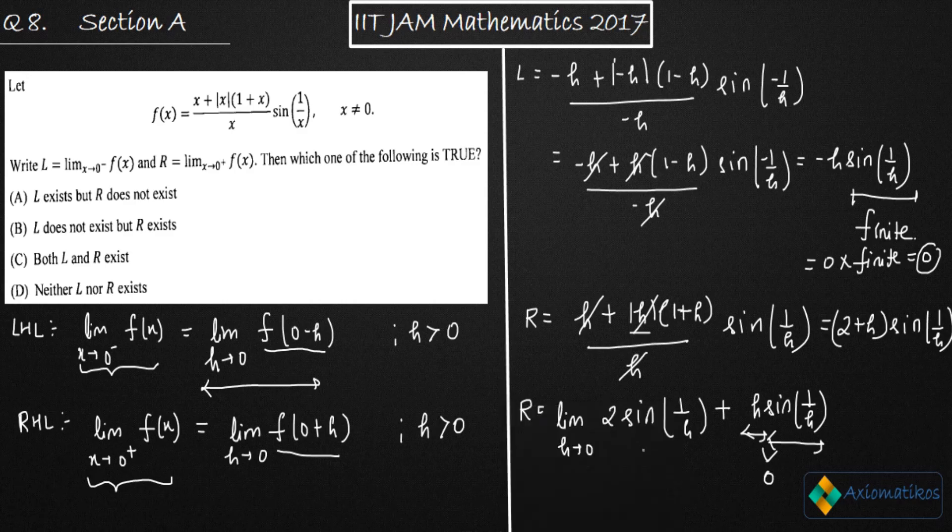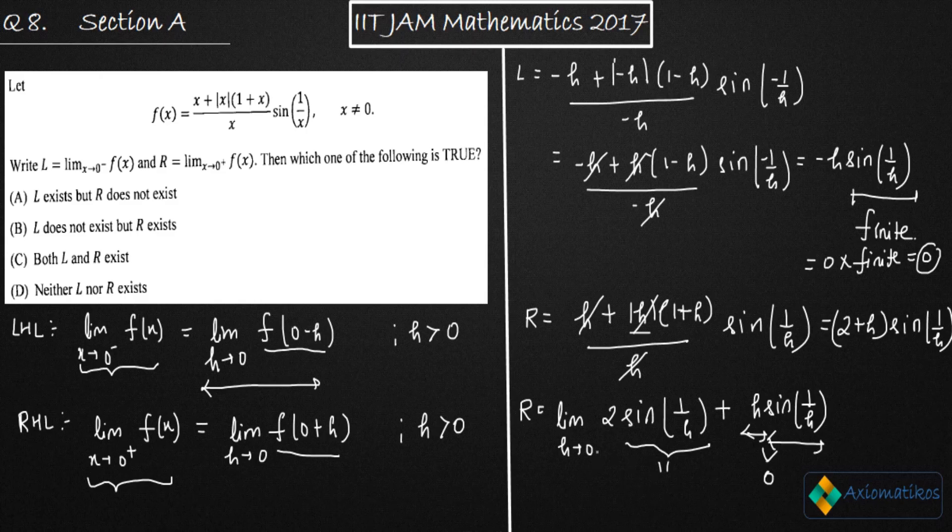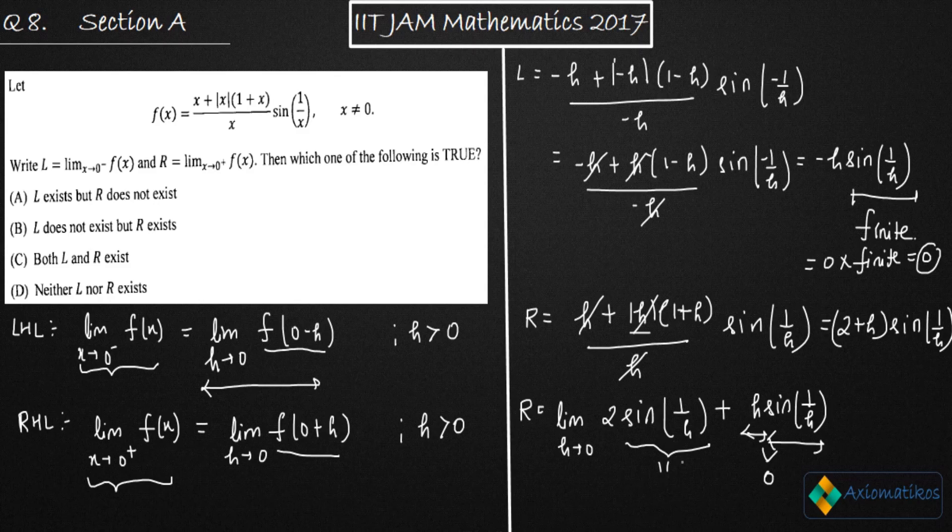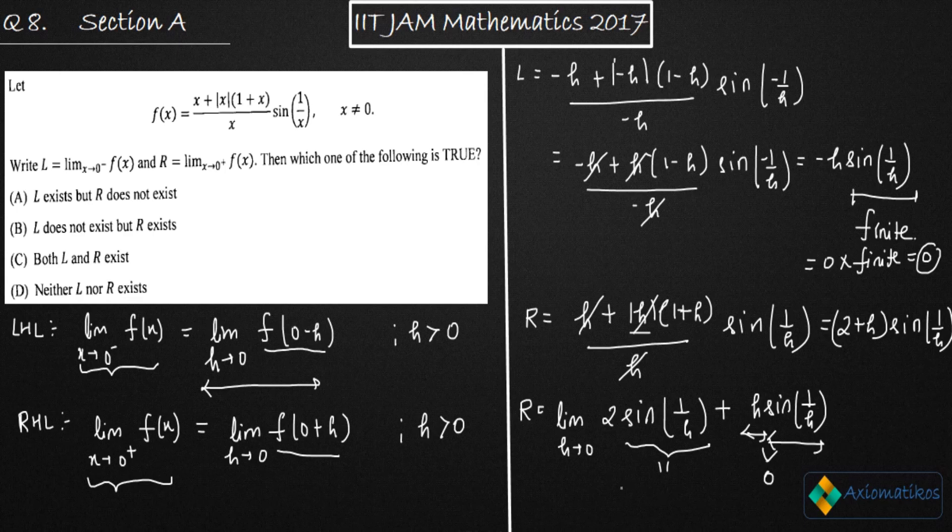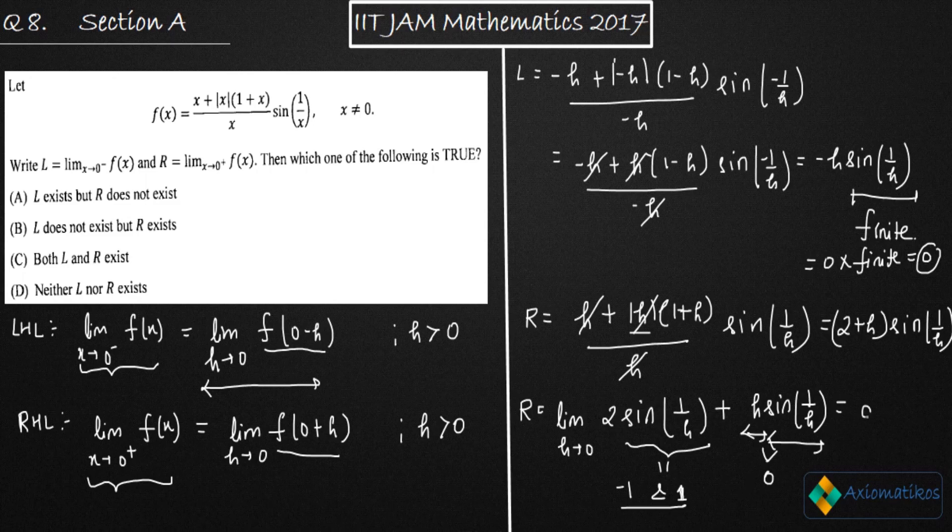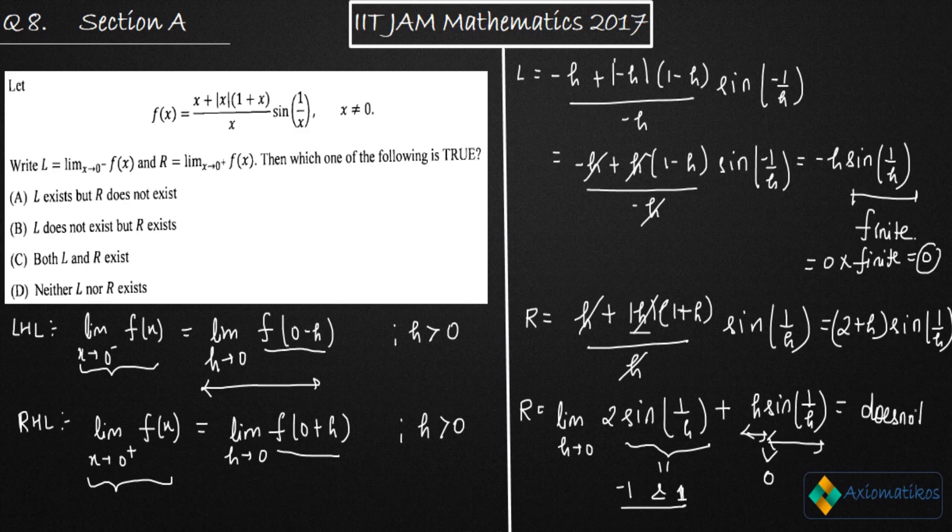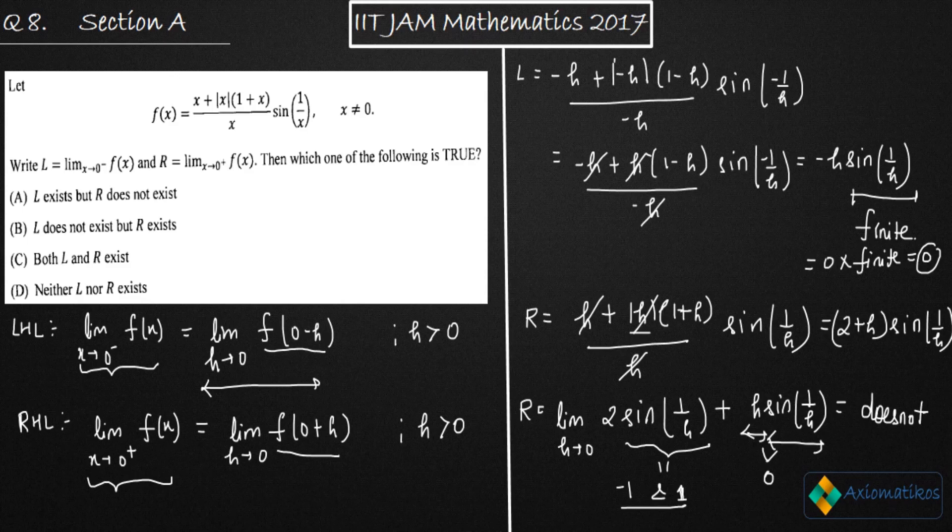Now let us try to find out answer for this one. When h goes to zero, this one will be sine infinity. Sine infinity means the number will oscillate between minus one and one. You will not get a finite number there. This one will oscillate between minus one and one. You don't know what it is. So finally, what you are getting is that this limit does not exist because the limit will oscillate between minus one and one.